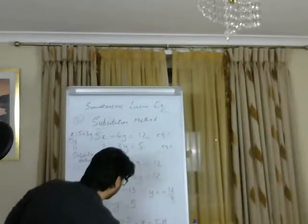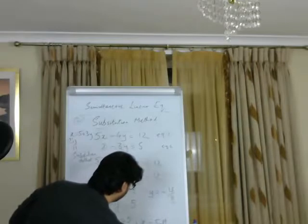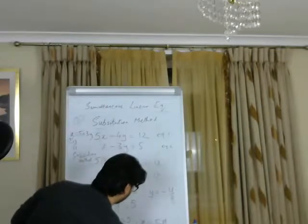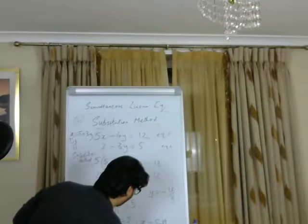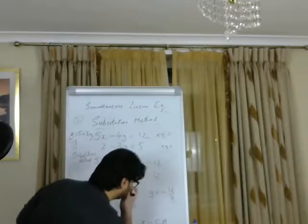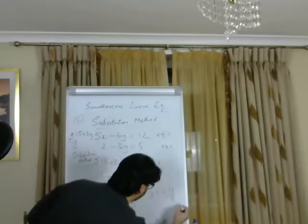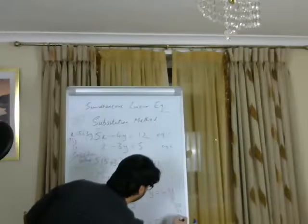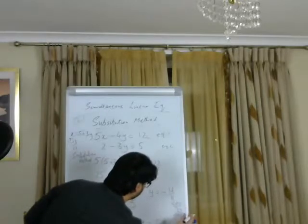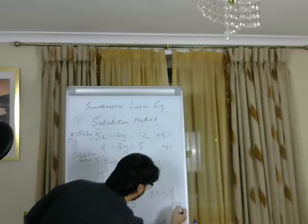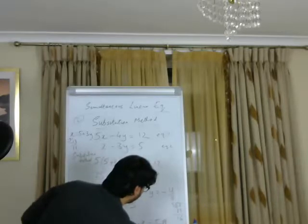And that gives us 55 minus 39 over 11. That gives us... let's take away 55, 39... so that gives us 16. So the answer for this is 16 over 11 for the value of x.